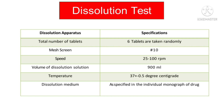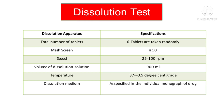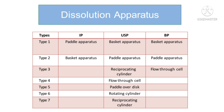Types of dissolution apparatus are as follows: As per IP — Type 1: Paddle apparatus, Type 2: Basket apparatus. As per USP — Type 1: Basket apparatus, Type 2: Paddle apparatus, Type 3: Reciprocating cylinder, Type 4: Flow-through cell, Type 5: Paddle over disc, Type 6: Rotating cylinder, Type 7: Reciprocating cylinder.